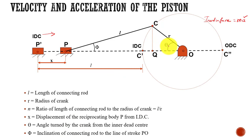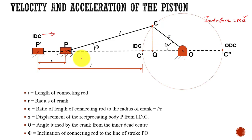Theta is the angle turned by the crank from the inner dead center. When the piston starts moving from P-dash, the crank angle theta is measured from the line of stroke. Phi represents the inclination of the connecting rod to the line of stroke PO. These are all the parameters we need to remember before deriving the equations of velocity and acceleration of the piston.